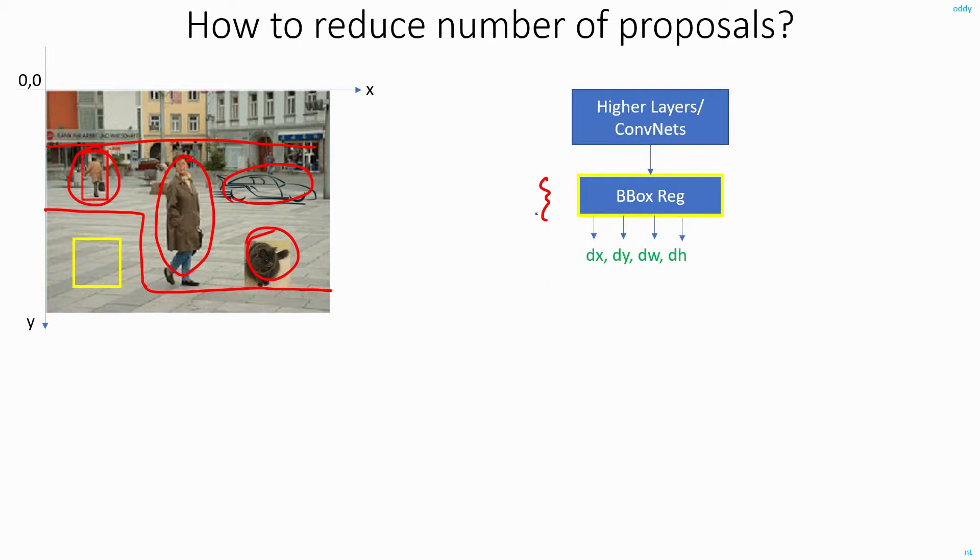Here what I can do is, let's say if the sliding window position is this, somehow I have to identify if this is a foreground region or a background region. If it is a background region, then straight away I can eliminate the proposals.